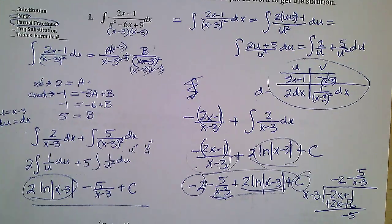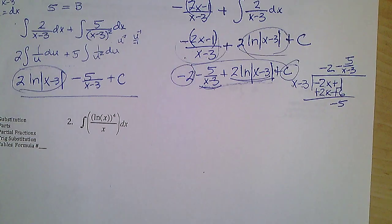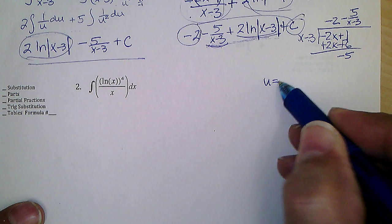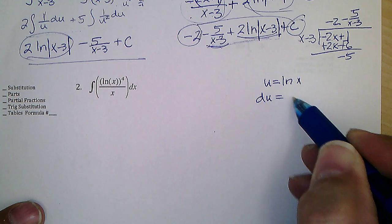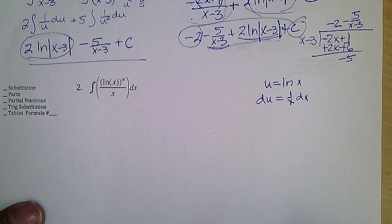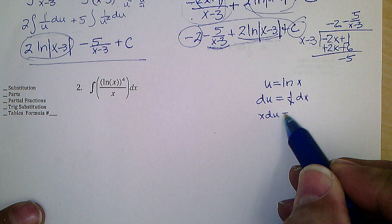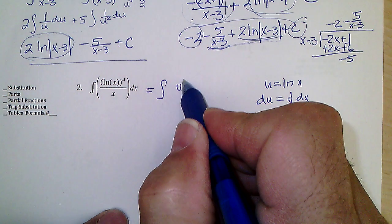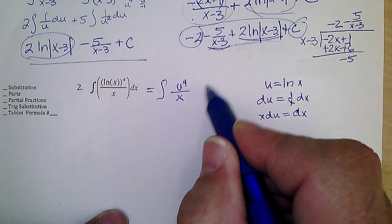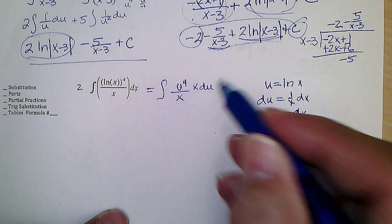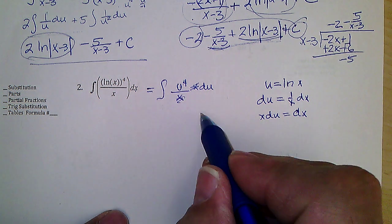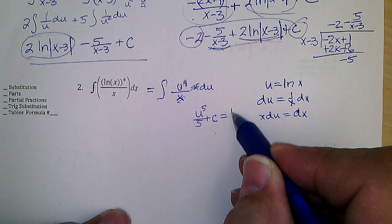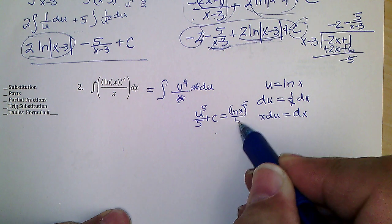I did number 1 three different ways. Now for this next one — several people said substitution is the easiest. Yes: if you let u = ln x, then du = (1/x) dx. The integral of (ln x)⁴/x dx becomes the integral of u⁴ du, since the x's cancel. That gives u⁵/5 + C = (ln x)⁵/5 + C.